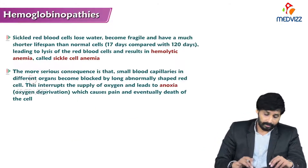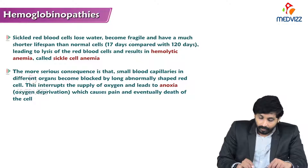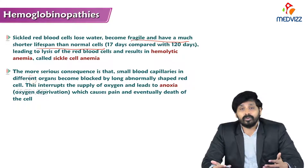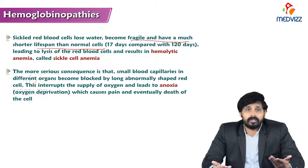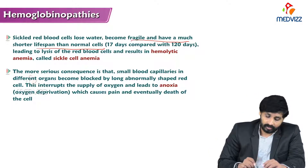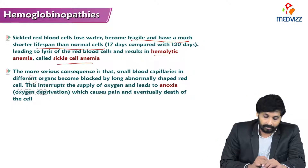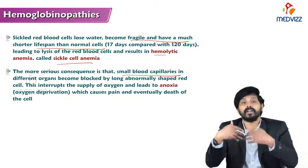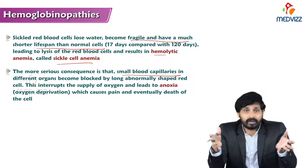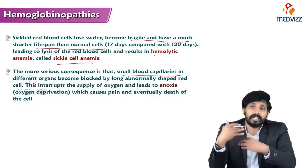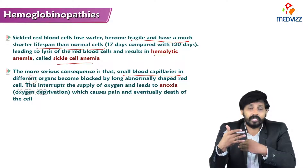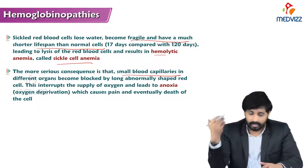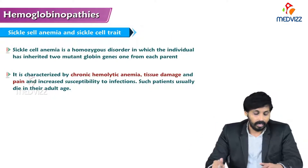Sickle red blood cells lose water and become fragile, with a much shorter lifespan compared to normal cells. Normal RBC lifespan is 120 days, but sickle cells have only a 17-day lifespan, leading to lysis of red blood cells and hemolytic anemia. A more serious consequence is that small blood capillaries in different organs become blocked by the long, abnormally shaped red cells. This interrupts oxygen supply, leading to anoxia — oxygen deprivation — which causes pain and eventually cell death (ischemia).